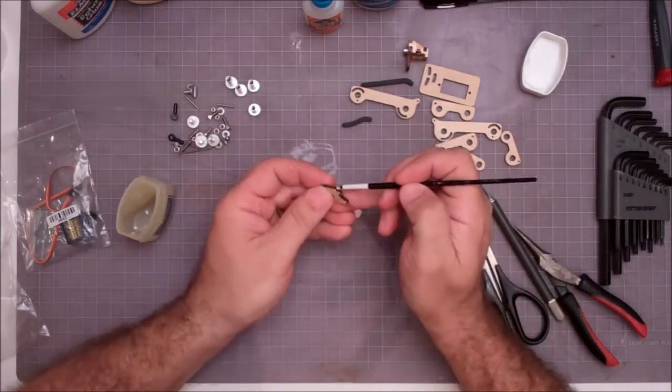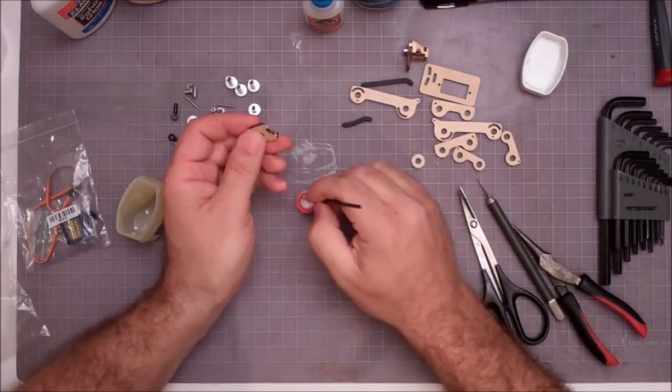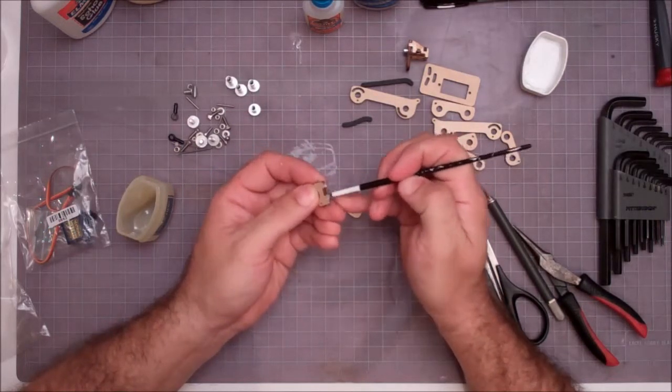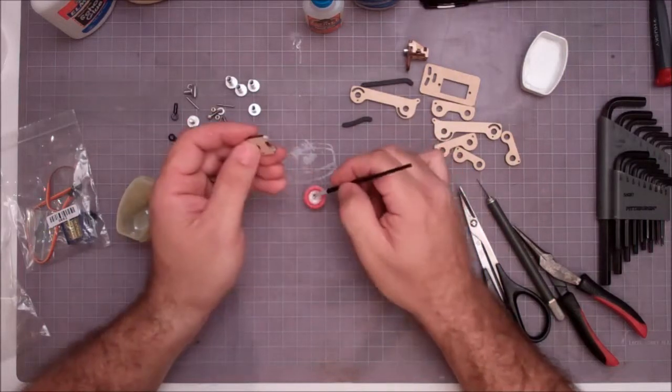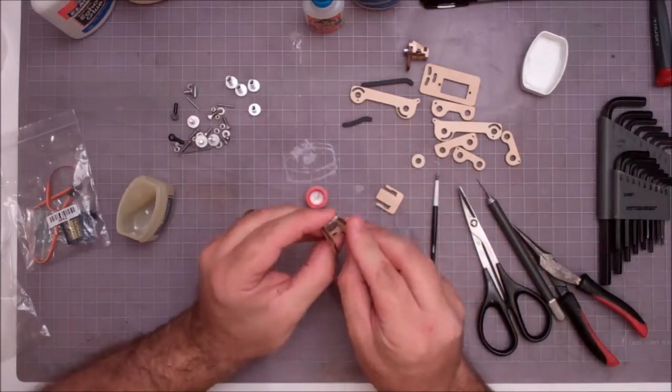Do it for the same for the other side, a little bit of glue. Now, the nice thing about the Elmer's glue is if you get a little sloppy, we can wipe it down when we're done with a damp rag and take all that glue off. So, we're going to slide the other side on here.